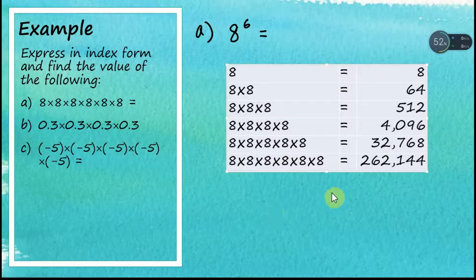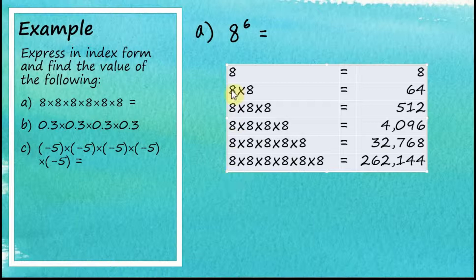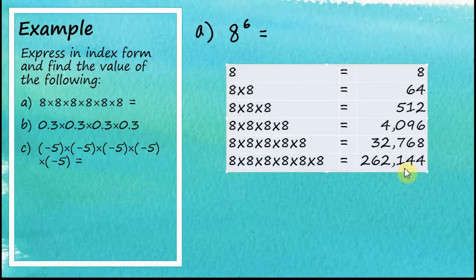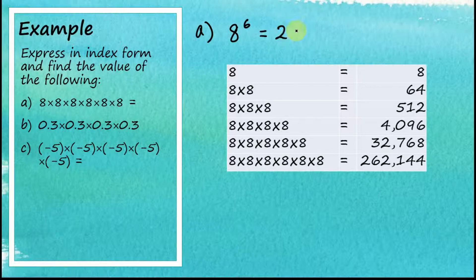I've created a little table for these calculations. We can see that if we multiply eight by itself six times, it is equal to two hundred and sixty-two thousand, one hundred and forty-four — 262,144.